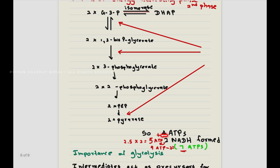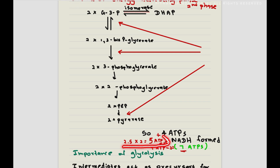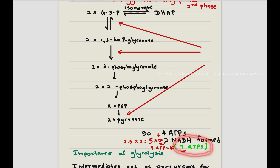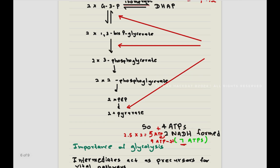Altogether, we have four molecules of ATP produced, plus two molecules of NADH. Since one NADH molecule equals 2.5 ATP molecules, the two NADH gives us five ATP molecules. So with four plus five, we have nine ATP molecules synthesized. But because glycolysis already uses two ATP molecules, in the end we have a net total of seven ATP molecules newly synthesized in the cell.